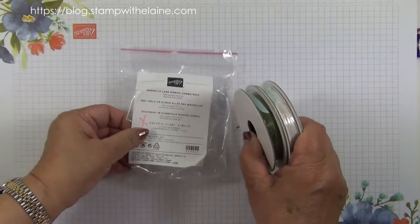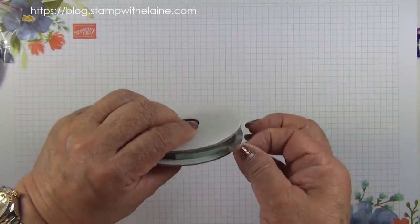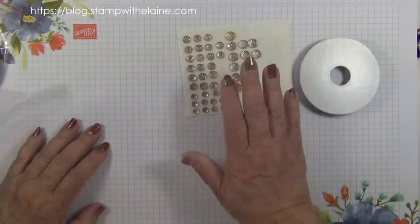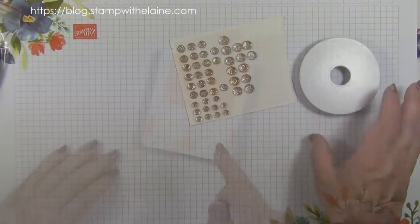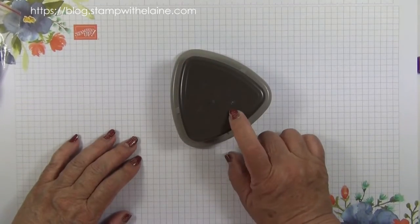You also need the Magnolia Lane ribbon combo pack. We're just going to use a bit of twine, the gold faceted dots, Petal Pink ink and a sponge dauber, and the Detailed Trio punch.